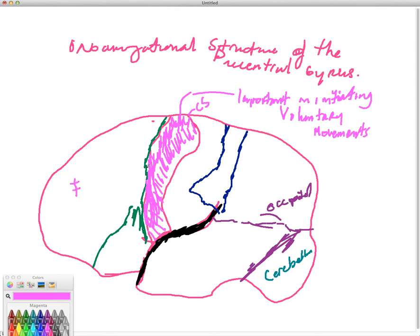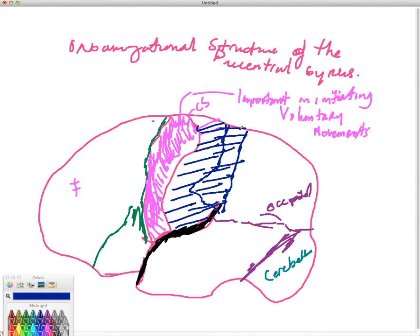This is the frontal, this is the precentral gyrus. This right here is the somatosensory area. This is the somatosensory area.